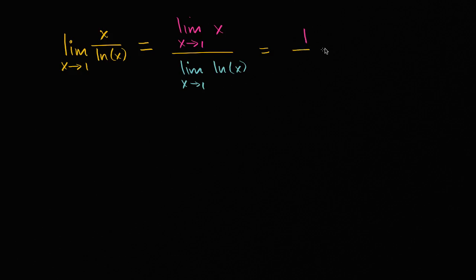And then the denominator, natural log of x is not defined for all x's and therefore it isn't continuous everywhere. But it is continuous at x equals one. And since it is continuous at x equals one, then the limit here is just going to be the natural log evaluated at x equals one.